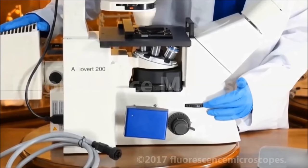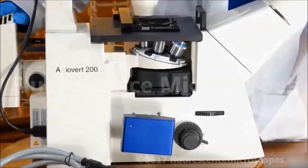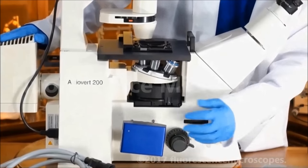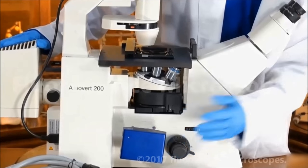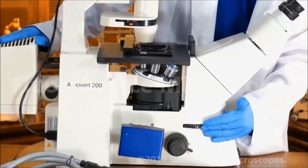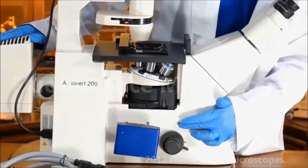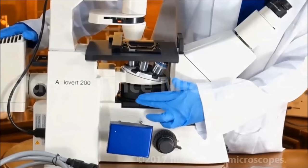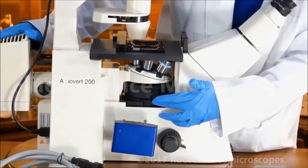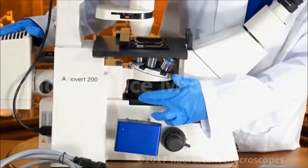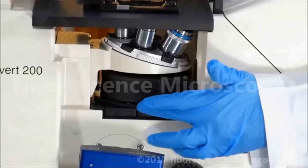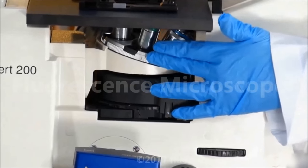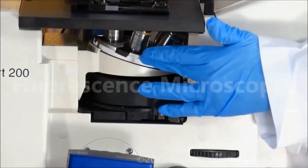This is a dial that changes the light to go from 100% eyepieces to 80% camera, 20% eyepieces. This dial changes the reflector module that's inside containing your dichroic filter cubes. And you manually rotate these objectives.